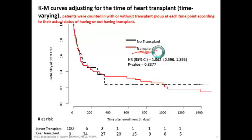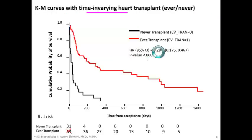The only difference between the two analyses is that the incorrect curve ignores the timing of receiving transplant. The mistake is that the model did not consider the actual timing of transplant — it considered patients who eventually received transplant as if they had received it at day zero, which was a wrong assumption.